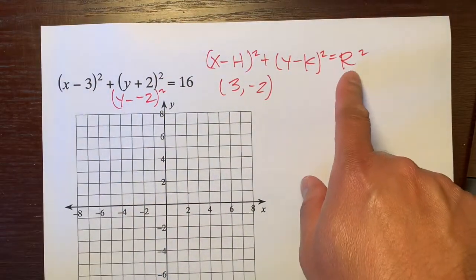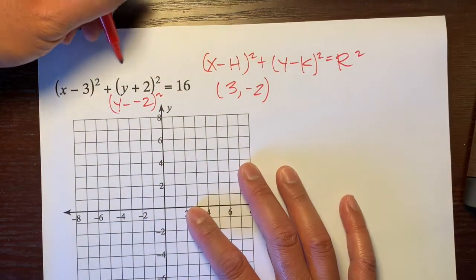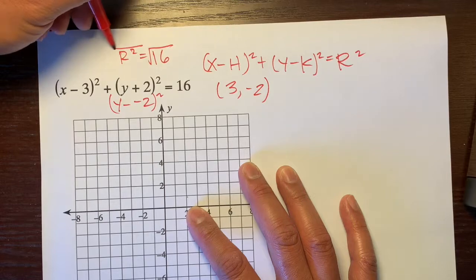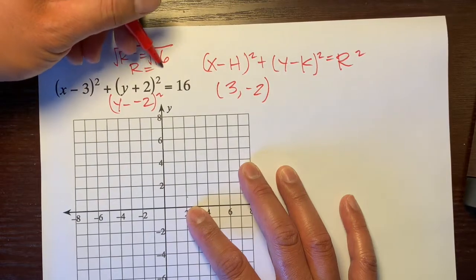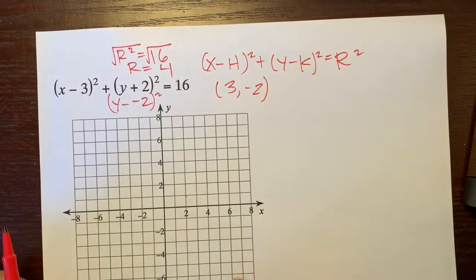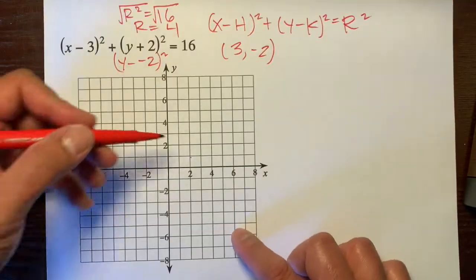And to get our radius, we'll just write R squared is equal to 16. We'll square root both sides. So R is equal to 4. So there's our radius. There's our center. Let's find 3, negative 2.